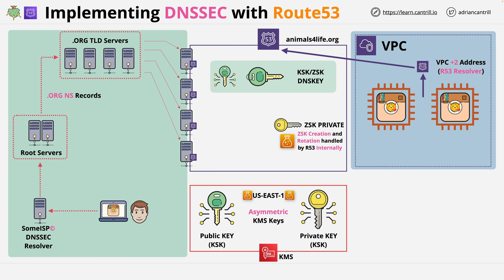The private key signing key is used to sign those DNS key records and create the RRSIG DNS key record. These signatures mean that any DNSSEC resolver can verify that the DNS key records are valid and unchanged. At this point, signing within the zone is configured — that's step one.